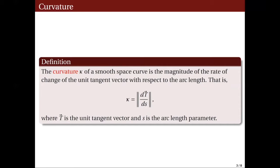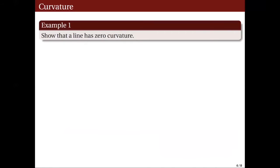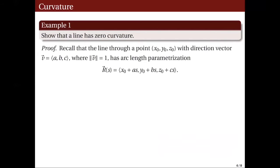Formally, we define the curvature of a smooth space curve to be the norm of the derivative of the unit tangent vector with respect to the arc-length parameter S. Observe that in this definition, we are required to provide an arc-length parametrization of the curve in order to get the derivative of the unit tangent with respect to the arc-length parameter S. Let us illustrate this using a particular example. For our first example, we would like to show that any line in space has zero curvature. We provide an arc-length parametrization for a line.